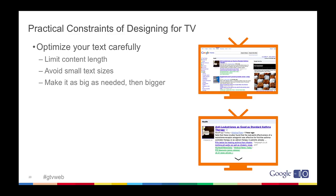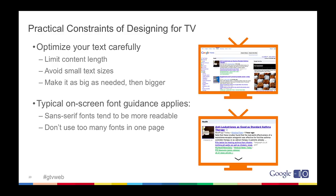On practical constraints, text is one of the areas where I can give you very definitive guidance. Don't ever use six-point font. Really the idea is you want to limit how much textual content you're shoving at the user on a TV display. You want to limit the length of content chunks - more than a paragraph is probably more than they're going to want to read at once on TV. Make it as big as you think it could possibly be needed, and then you might even want to make it a little bit bigger. Typical on-screen font guidance still applies: sans-serif fonts tend to be more readable, and don't use a ton of different fonts on a page because it's kind of jarring. We do support font embedding on Google TV, which is handy for web designs.